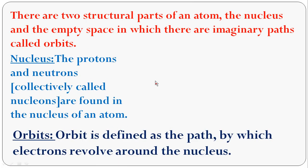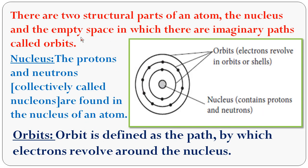There are two structural parts of an atom: the nucleus and the empty space in which there are imaginary paths called orbits. The center is the nucleus and the empty space around the nucleus contains different orbits. The nucleus contains protons and neutrons, collectively called nucleons. Orbits are defined as the path by which the electron revolves around the nucleus, and the electrons revolve around the nucleus in these orbits.